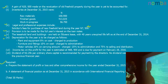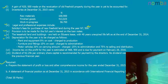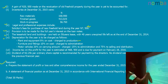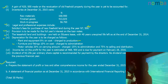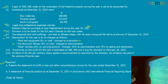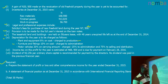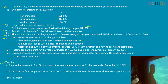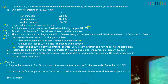Depreciation for the year is to be charged as follows: plant and equipment at 8% on cost, charged to production; furniture and fittings at 10% on cost, charged to administration — both using the straight-line method. Motor vehicles at 20% on carrying amount, with 25% charged to administration and 75% to selling and distribution — meaning motor vehicles use the reducing balance basis.